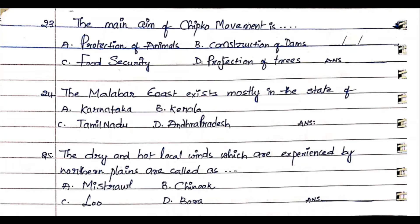Question 24: The Malabar coast exists mostly in the state of. Option A. Karnataka, Option B. Kerala, Option C. Tamil Nadu, Option D. Andhra Pradesh. The answer is Option B. Kerala.